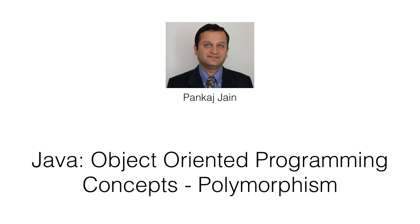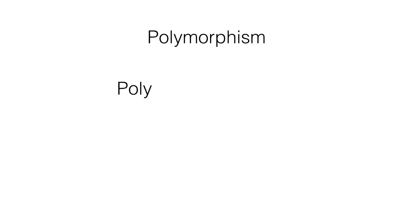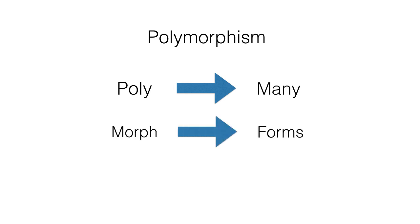In this video, we will understand polymorphism. Poly means many and morph means forms, so polymorphism means many forms. In real life, we see examples of polymorphism.